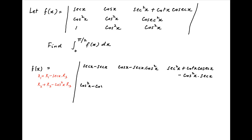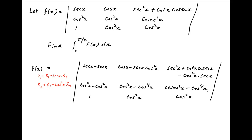In the second row, the first element is cos²(x) minus cos²(x). The second element is cos²(x) minus cos⁴(x). The third element is cos²(x) minus cos⁴(x). The third row is left as is; its elements are 1, cos²(x), and cos²(x).